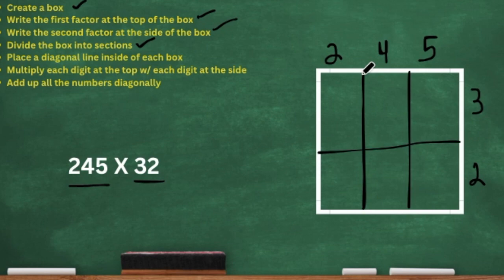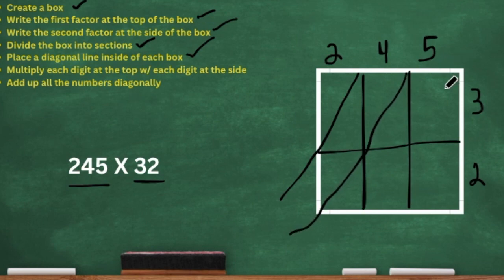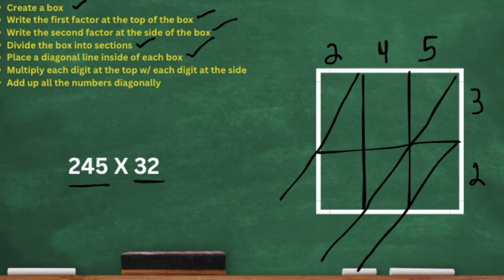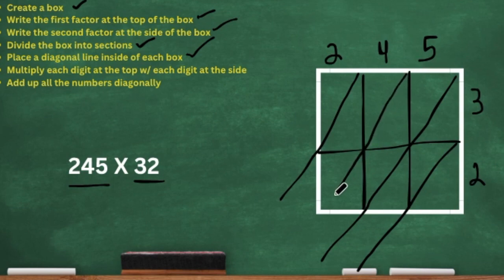Now we are going to draw our diagonal lines inside of each box. Just make sure you guys are trying to be as straight as possible. Some of them are crooked, so let's erase and do those again. This goes to show guys — even though I'm a teacher, sometimes I mess up too and have to start all over. Just take your time and we'll get it.